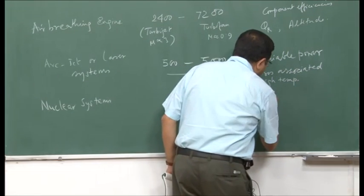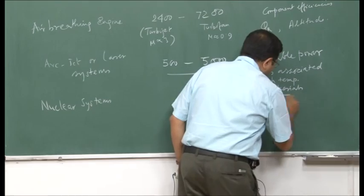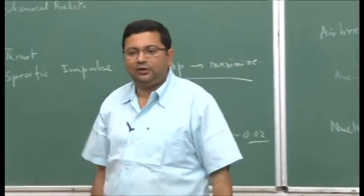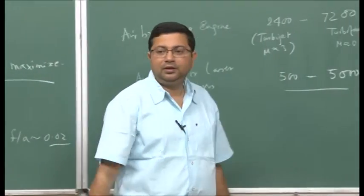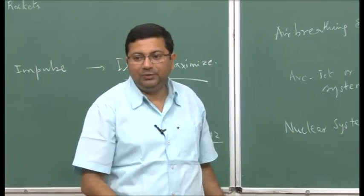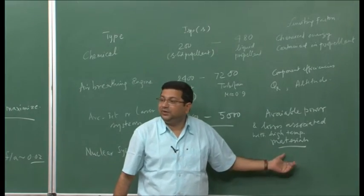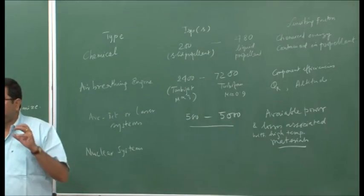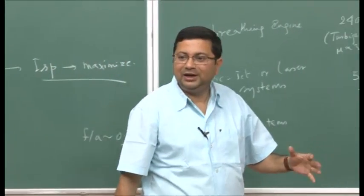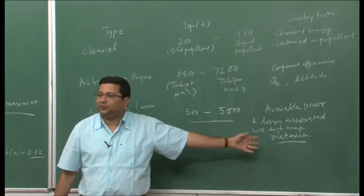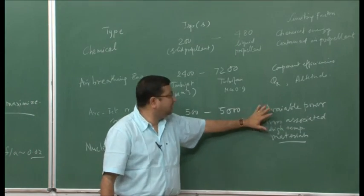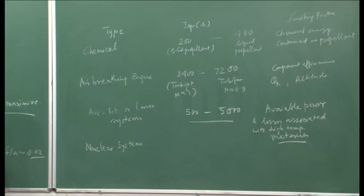Another problem is materials. The materials have to withstand high voltage, high density of electrons, and high temperature. Insulation also becomes a critical issue — if you have such a high-voltage source within your satellite alongside many electronic instruments, and it is not well insulated, you will destroy the entire satellite. Therefore, insulation is a very important issue in the use of arc jet or laser thrust systems.